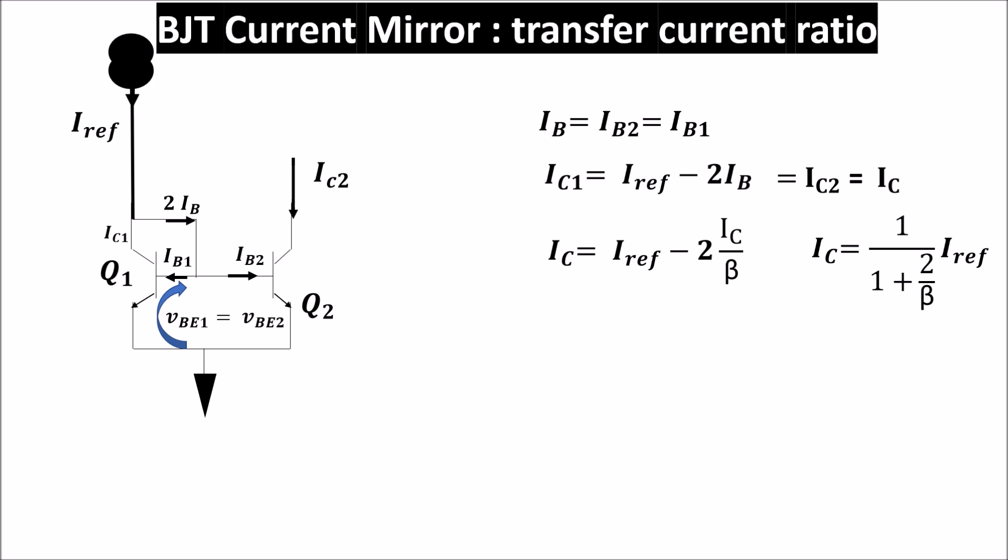We can see that IC the mirrored current is almost equal to Iref because 2 divided by beta is a very small number. However this error exists and it is bigger if we add other branches. In this case the current we subtract to Iref is 4IB and IC becomes this, and for N branches it becomes this. So if N is big the mirrored current can be quite different from the reference one.